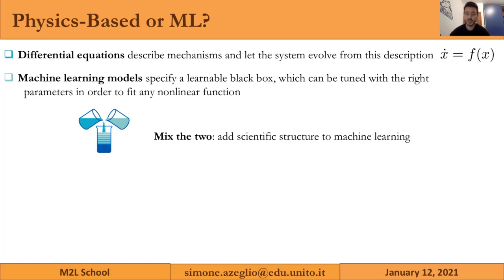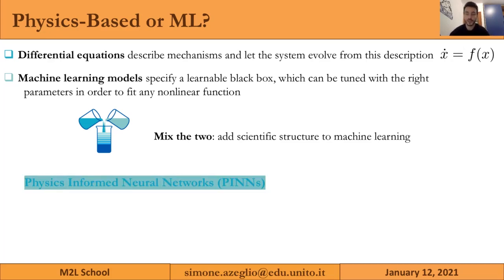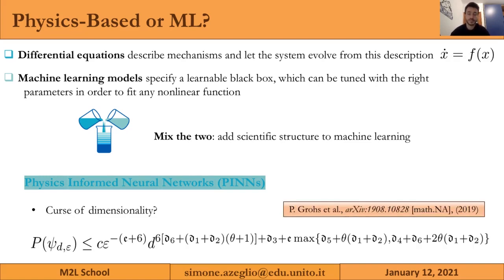We can add scientific structure to machine learning, and the output is physics-informed neural networks, where instead of training a neural network directly on data, we employ a shallow feedforward neural network as an efficient approximator of trajectories in the solution space. The most important advantage may be avoiding the curse of dimensionality: physics-informed neural networks have a polynomial bound in complexity, whereas numerical integrators have exponential growth with respect to dimensionality.